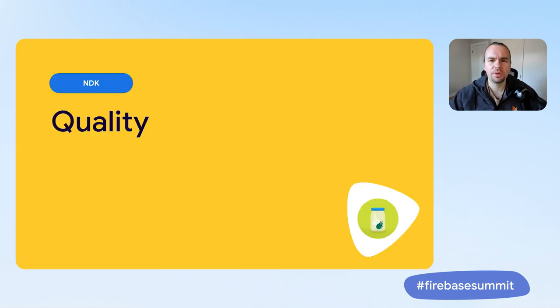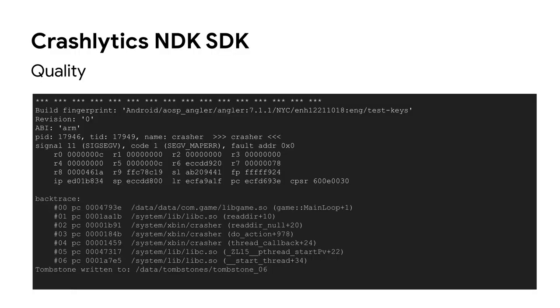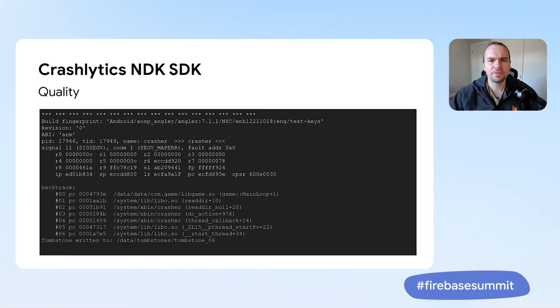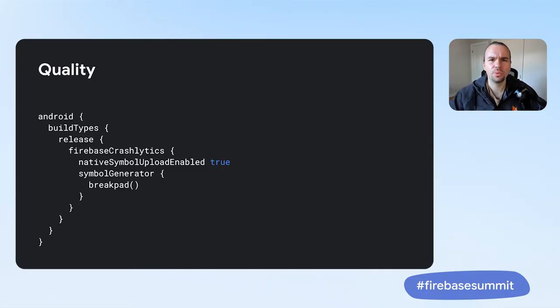Receiving a crash report is just the start of the battle — decoding what it is trying to tell you is the next big challenge. Have you ever looked at Android-generated tombstones that contain only a single application frame, or no application frames at all? This happens frequently for apps that are highly optimized. The mechanism that generates these tombstones doesn't have access to any debug information from your app. Luckily, the Crashlytics NDK tooling does have access. In the most recent version, we've switched our symbol file format to that of Breakpad.